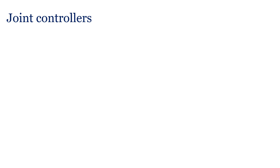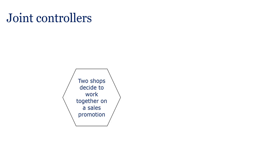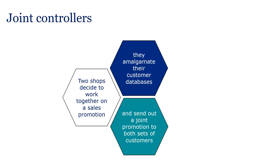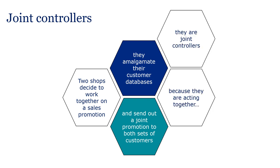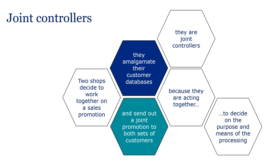In other circumstances, two or more controllers might act together to decide the means and purpose of the processing, and in this case they would be joint controllers. For example, two shops might decide to work together on a sales promotion — they amalgamate their customer databases and send out a joint promotion to both sets of customers. They are joint controllers because they are acting together to decide the purpose and means of the processing. Note that two controllers who share personal data might remain as separate controllers if they process the data for different purposes.